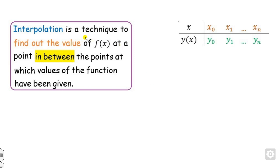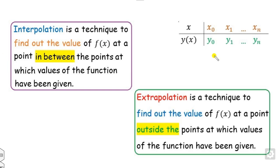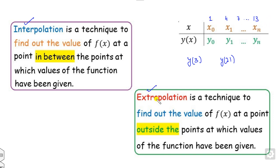The purpose of interpolation is suggested by the word 'inter,' meaning inside. If you find values that lie between x₀ and x₁, the method is called interpolation. For example, if the data points are at 4, 7, and 13, and you find the value at 3, which lies between them, that is interpolation. But if you want to find the value at 21, which lies outside the domain, that is called extrapolation.